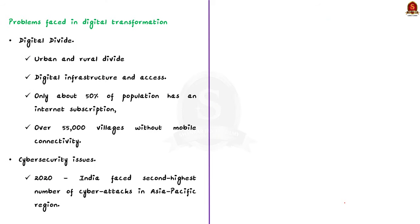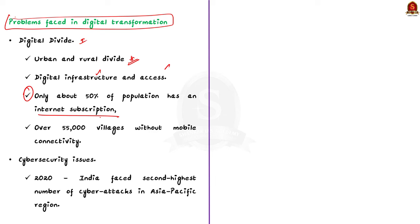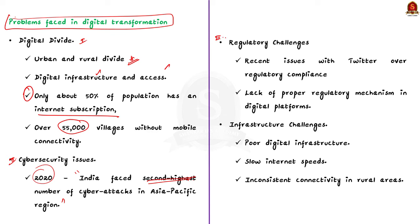Now the challenges in digital transformation. First, the Digital Divide — there is still a big gap between rural and urban areas when it comes to digital infrastructure and access. Only 50% of the population has internet subscription, and over 55,000 villages are deprived of mobile connectivity. Second, Cyber Security Issues — the increased reliance on digital platforms has elevated the risk of cyber attacks. In 2020, India faced the second highest number of cyber attacks in the Asia-Pacific region. Third, regulatory challenges — issues with Twitter and the Indian government over regulatory compliances show the lack of proper regulatory mechanisms. Fourth, poor digital infrastructure including slow internet speeds and inconsistent connectivity affects the full potential of digitalization.